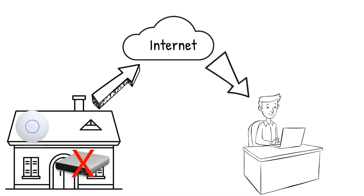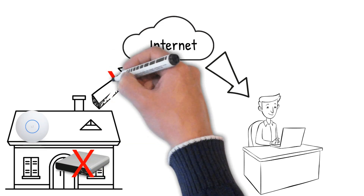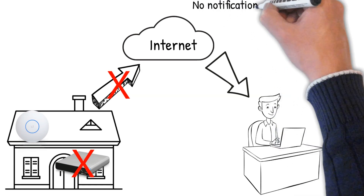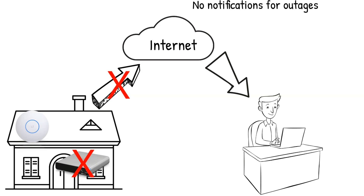For instance, let's say the cloud key went down or there's an issue with that internet connection. In either of these two cases you will not receive any type of notification. That's one of the main drawbacks of this type of setup. Also, if you manage multiple sites, this type of setup could be a bit tedious.